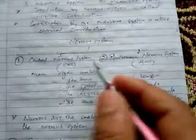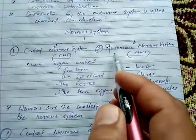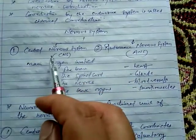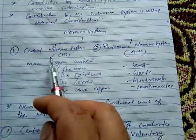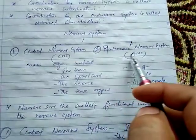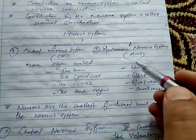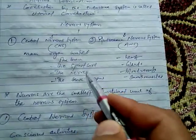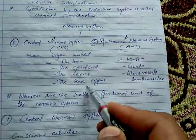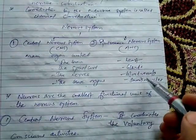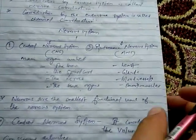Now the nervous system, as you can see from the outline here, is of two major parts. The organs involved in one part are brain, spinal cord, nerves and sense organs. The organs involved in the other part are heart, glands, blood vessels and smooth muscles.